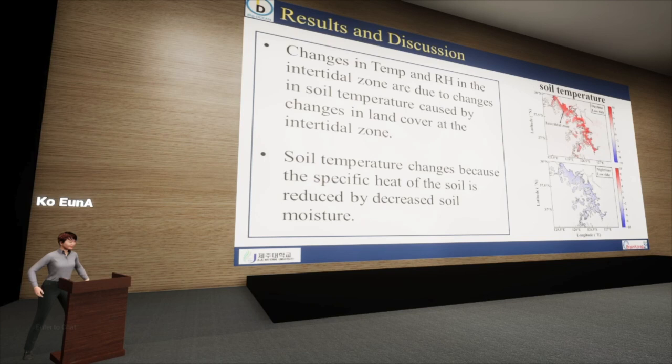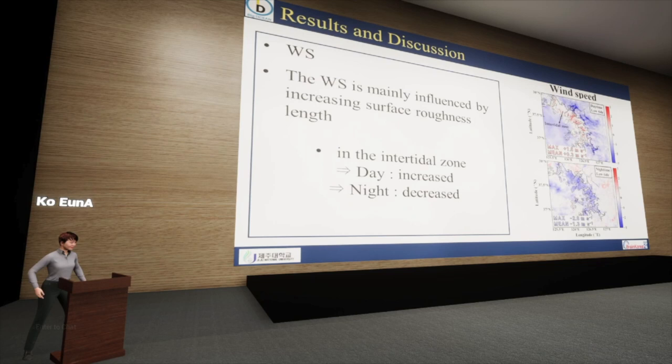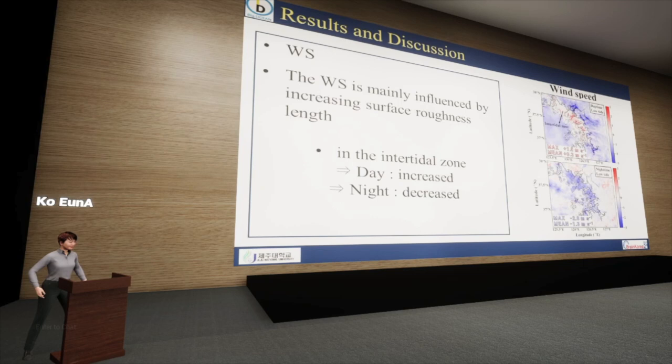The temporal and spatial patterns in wind speed between the tidal and control simulations were distinguished from those of air temperature and relative humidity. The daytime wind speed in the tidal simulation increased slightly due to the elevated temperature gradient between the intertidal zone and the open sea, as a result of the higher daytime temperature in the intertidal zone. In contrast, the nighttime wind speed decreased considerably in the intertidal zone, predominantly due to the increased surface roughness length.